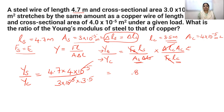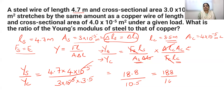We get 4.7 into 4, which is 18.8, divided by 3 into 3.5, which is 10.5. So the ratio is 18.8 divided by 10.5, which means 188 divided by 105. This value is the ratio of Young's modulus of steel to that of copper, approximately 1.79.